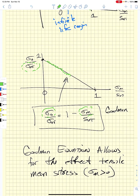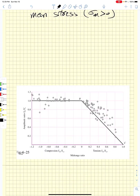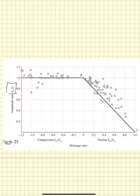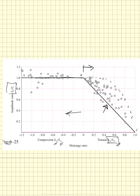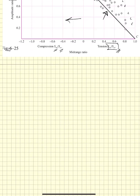Instead of plotting sigma_a / sigma_ar, we let that equal the calculated endurance limit, and end up with a plot of stress amplitude divided by endurance limit versus mean stress divided by ultimate strength. Tensile mean stress is to the right of zero, normalized by ultimate in tension; compressive to the left, normalized by ultimate in compression. Experimental data shows the Goodman line is conservative in the tensile region — data allows slightly larger stress amplitudes — but the Goodman line is a pretty safe bet.